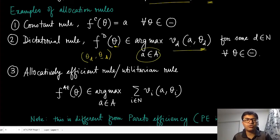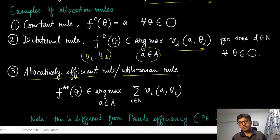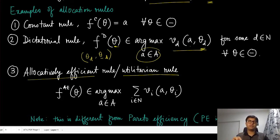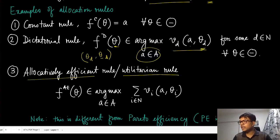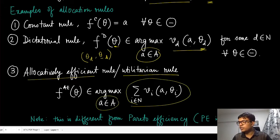A third allocation rule is the allocatively efficient rule, also called the utilitarian rule. We look at the sum of the values of all agents. Different alternatives — building a bridge, a park, or a museum — give different valuations for different players. We take the sum of valuations of all agents and pick the allocation that maximizes that sum. This allocation is called allocatively efficient.